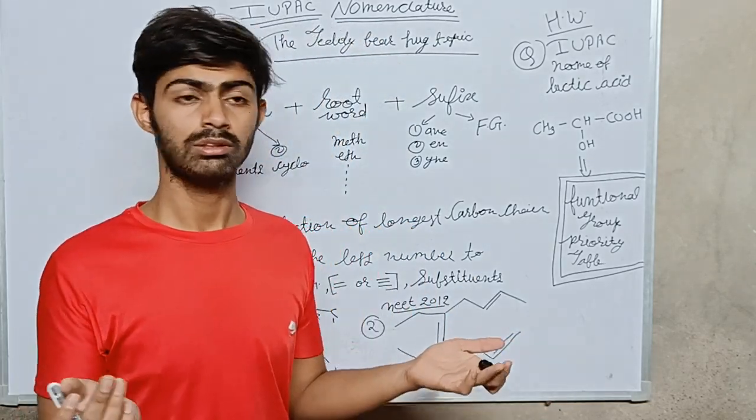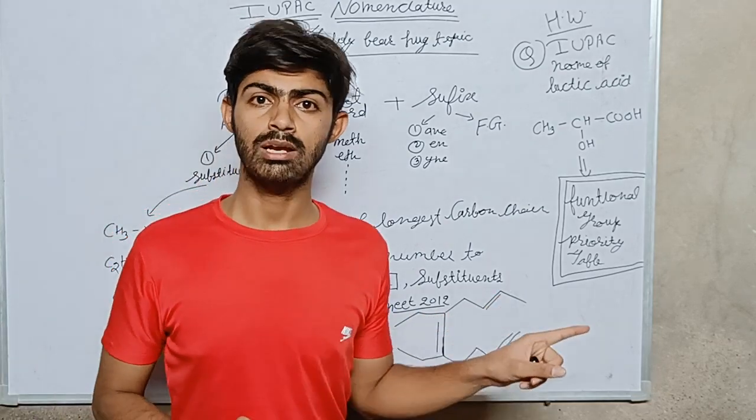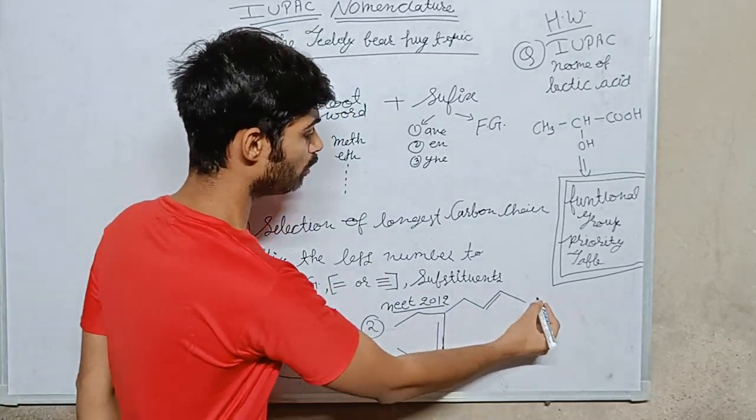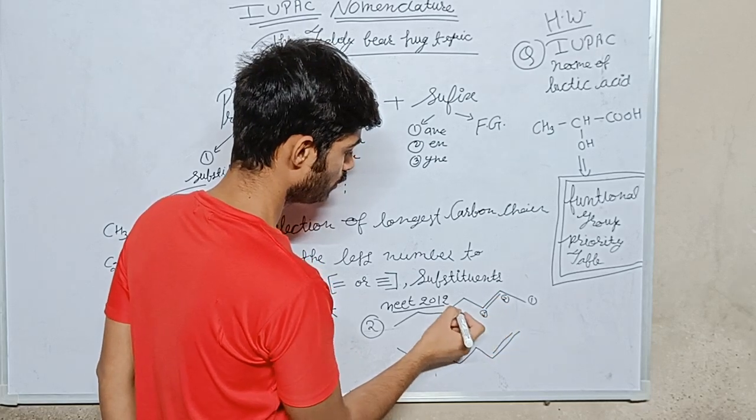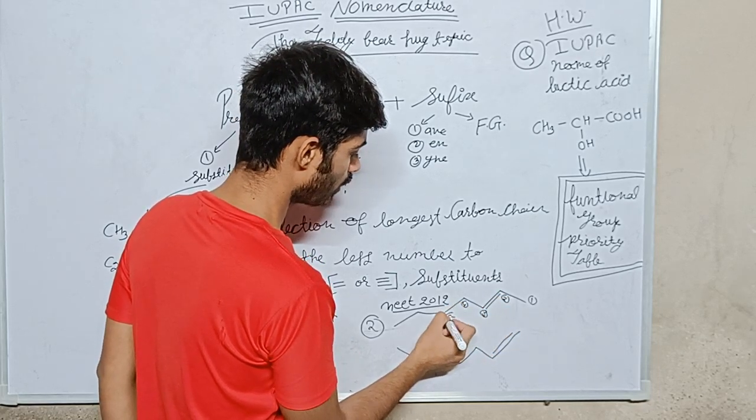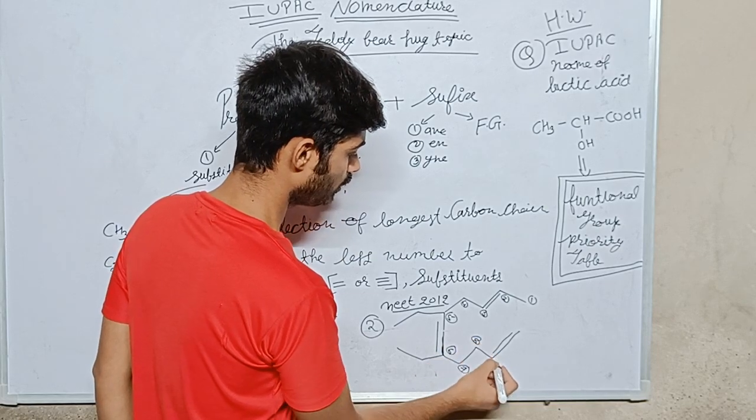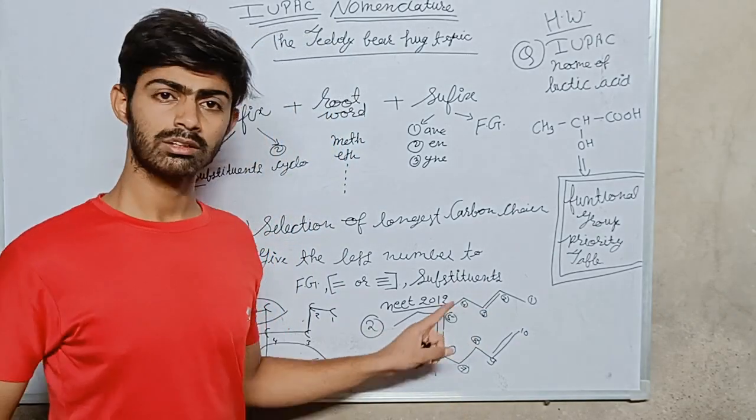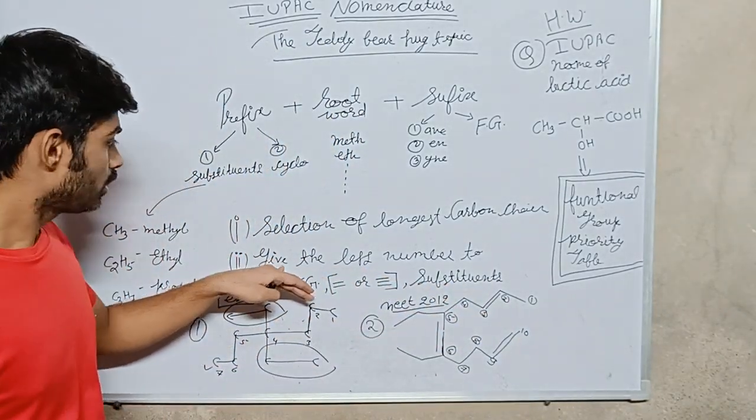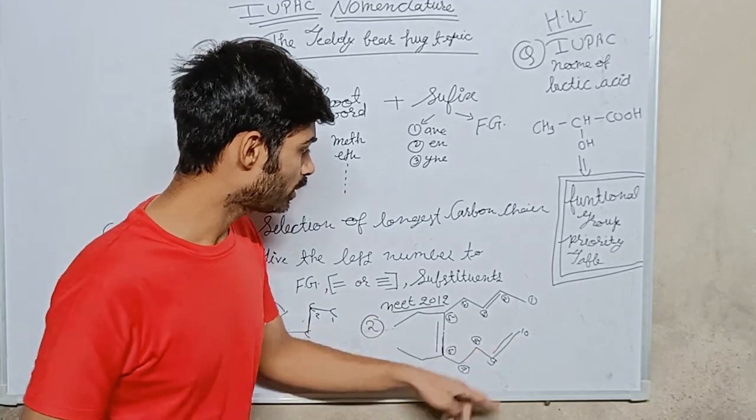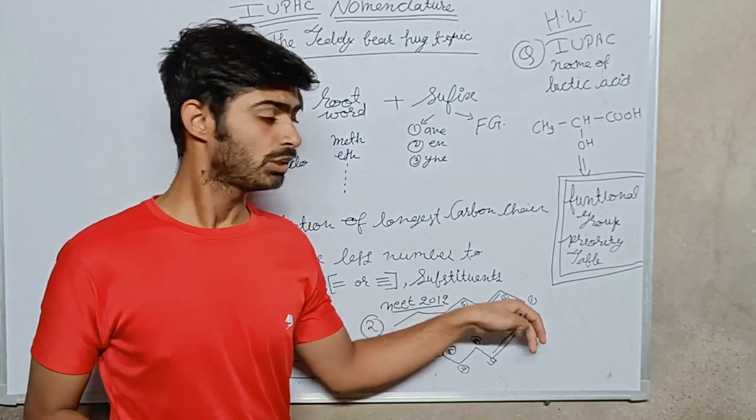2, 3, 4, 5, 6, 7, 8, 9, 10. Is this correct? No, this is not correct. Because my double bond does not get the first number. Here my double bond gets the second number, so this numbering is not right. So this is the wrong way to number this carbon chain.